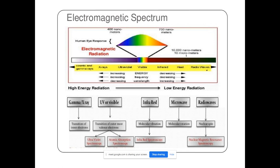Radio waves have higher wavelength and lower energy, since E = hν and E is inversely proportional to wavelength λ. Radio waves are used in NMR spectroscopy (Nuclear Magnetic Resonance). When a magnetic field is applied and radio waves are incident, nuclear spin transitions occur, giving the NMR spectra. This concept is also used in MRI (Magnetic Resonance Imaging) scanning to detect damage in organs.